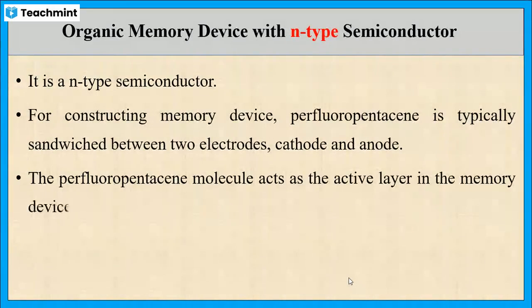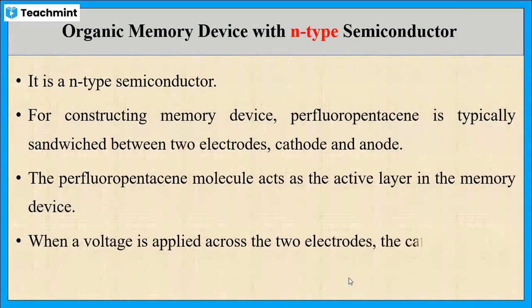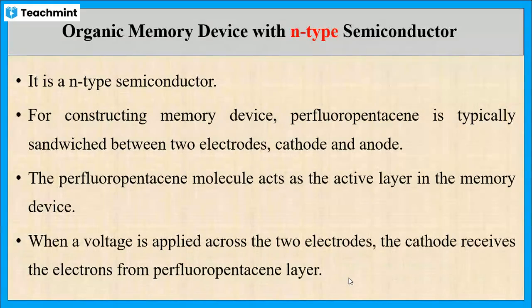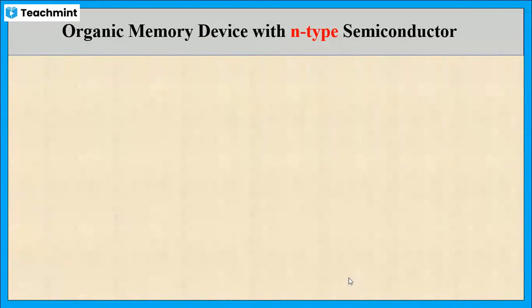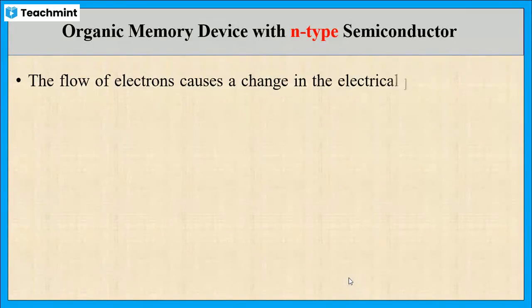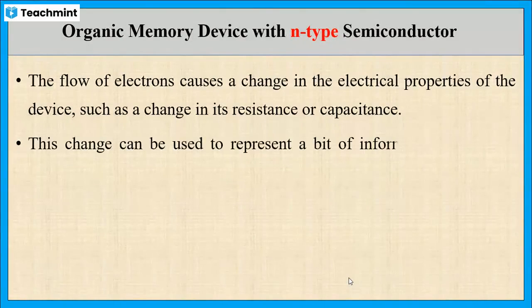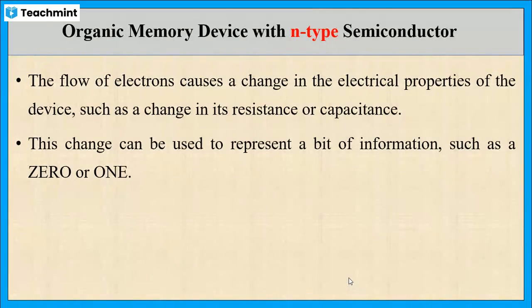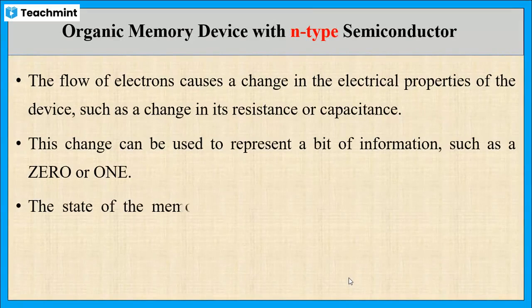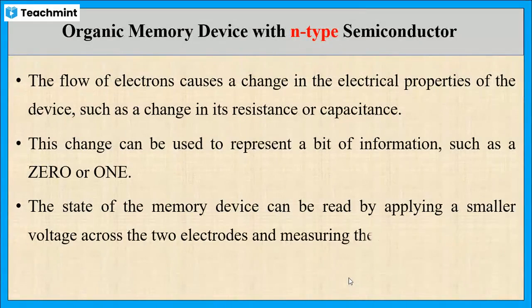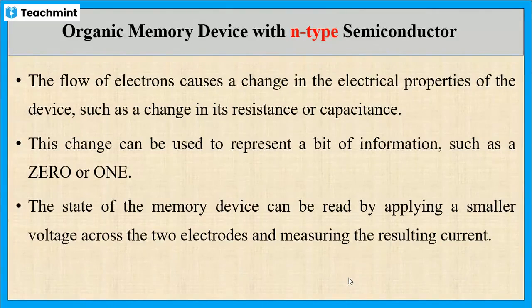This perfluoropentacene molecule acts as the active layer in the memory device. When a voltage is applied across the electrodes, the cathode receives the electrons from the perfluoropentacene layer. The flow of electrons causes a change in electrical properties, such as resistance or capacitance. This change can be used to represent a binary digit of information, such as 0 or 1. The state of the memory device can be read by applying a smaller voltage across the two electrodes and measuring the resulting current.